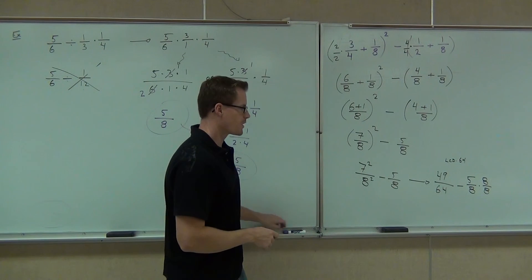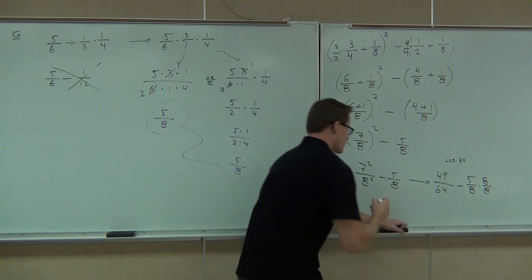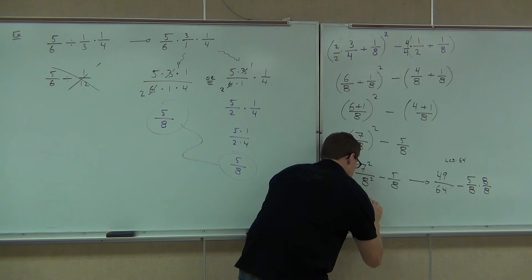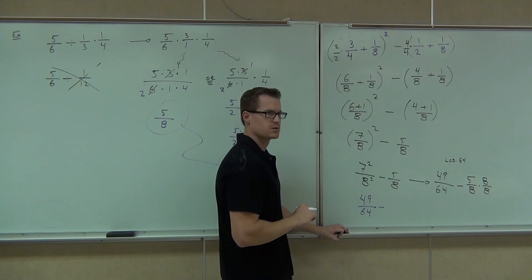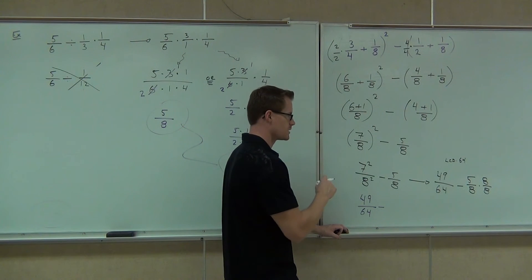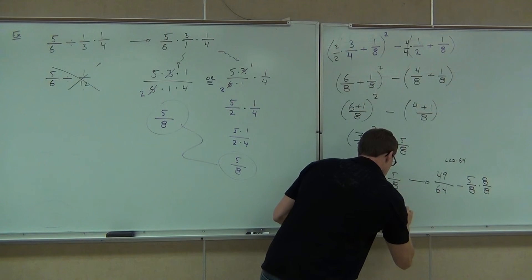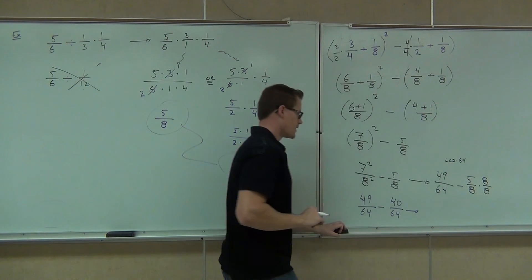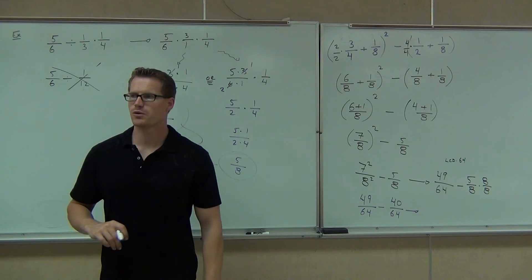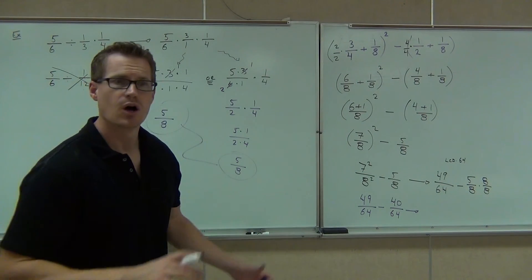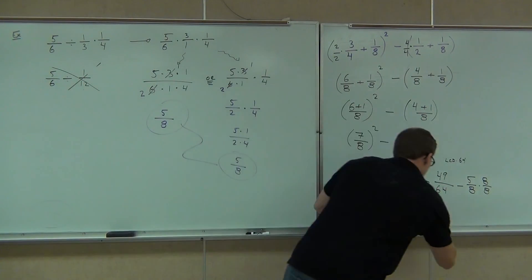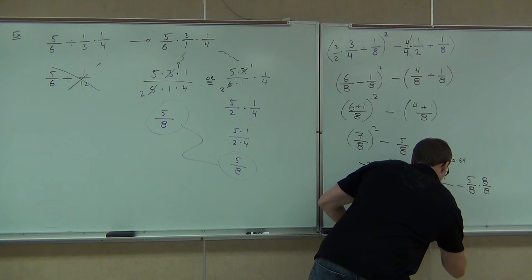So, if we multiply by eight over eight, we'll get 49. 49-64. What's the five-eighths times? How much? Forty-sixty-four. So, we're going to have 49-sixty-fourths minus 40-sixty-fourths. So, we've got that common denominator. We'll put them together as one fraction. Forty-nine. Forty-sixty-fourths.